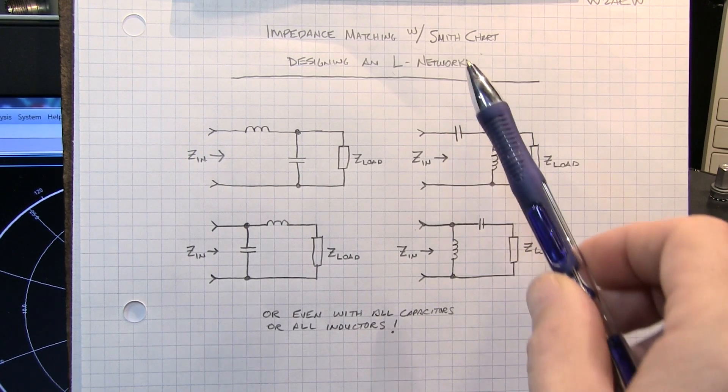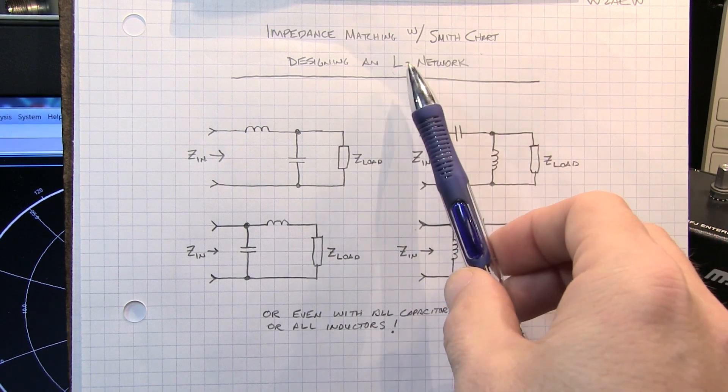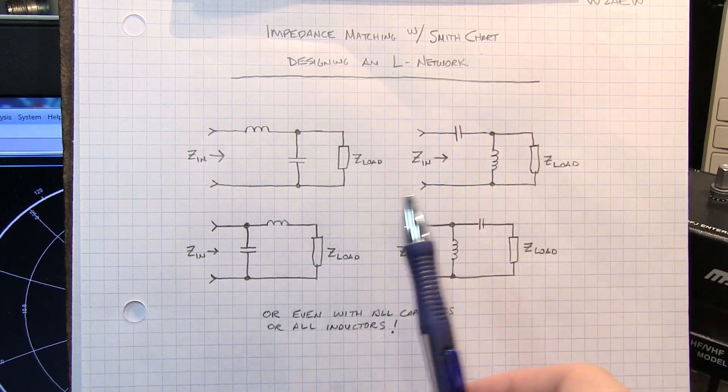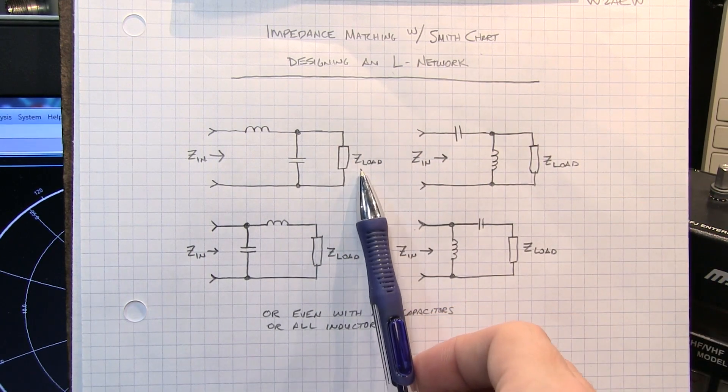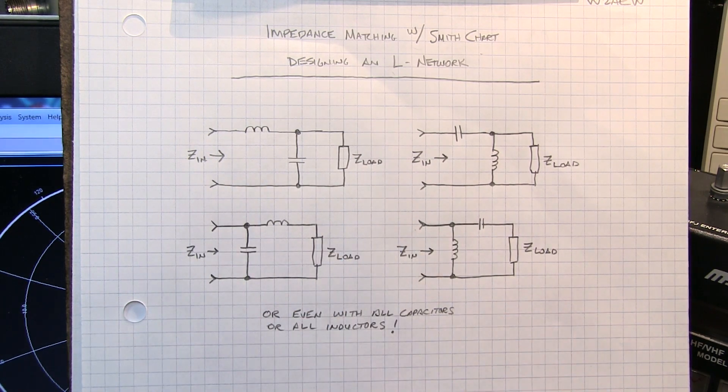In today's video, I'm going to take a look at how to use the Smith chart to design an impedance matching network, in this case, an L network. We'll use that to take our complex load and transform it into the system impedance, in this case, 50 ohms.